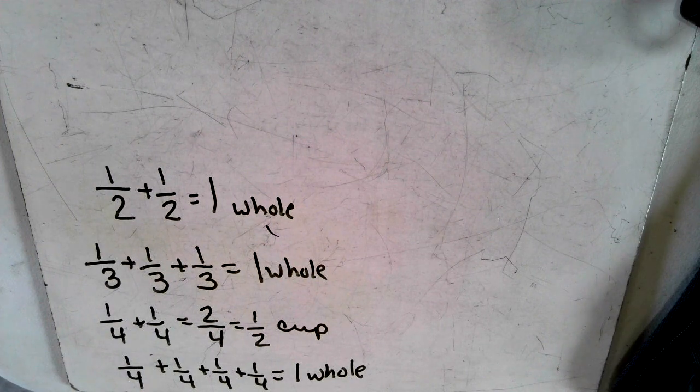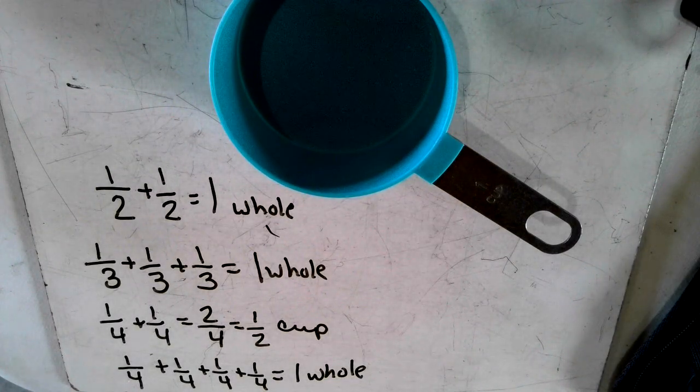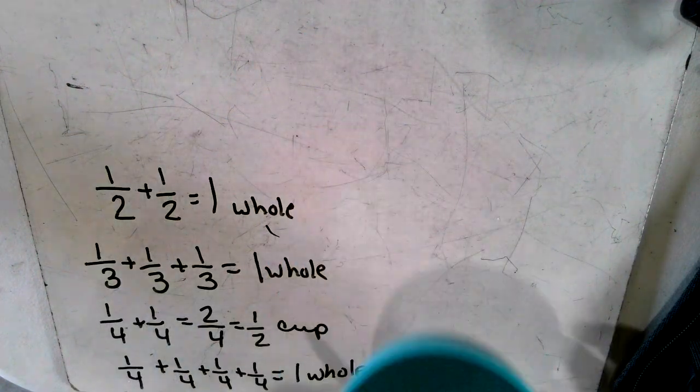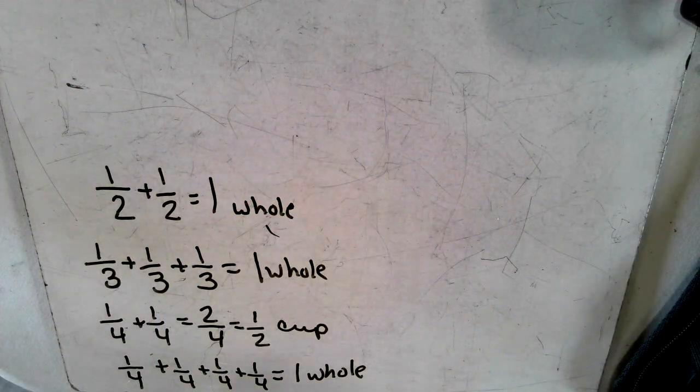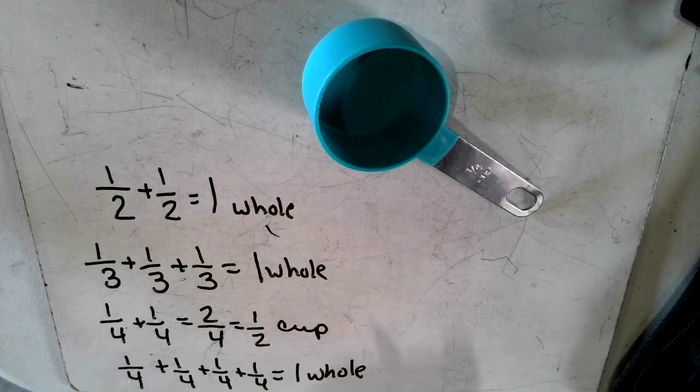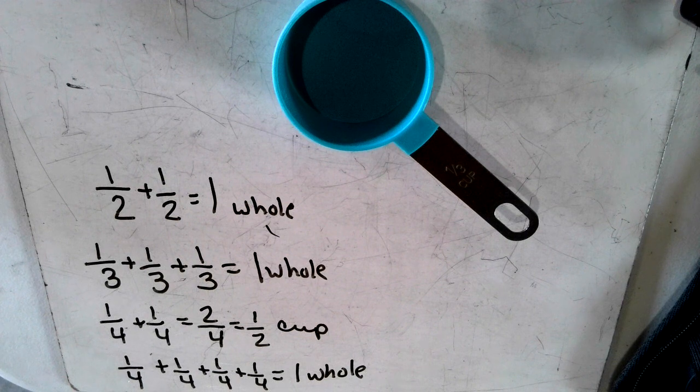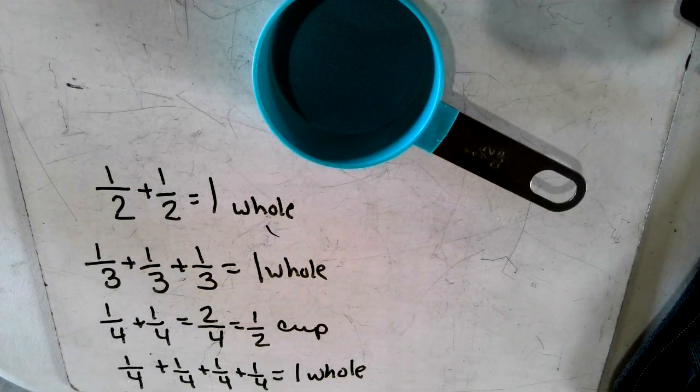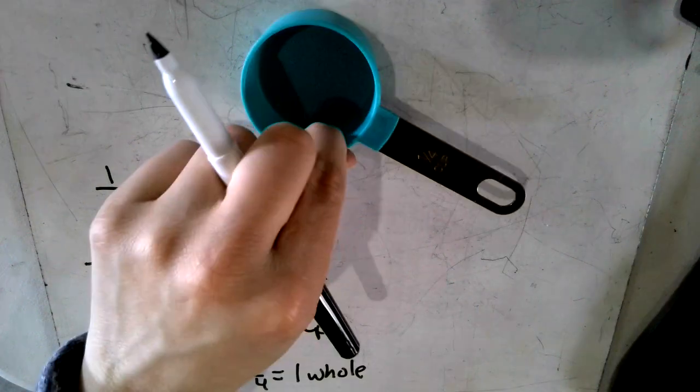You don't eyeball it and say, 'Oh, it's roughly up to here, so it's good enough.' No! If you need three fourths, use three of those. You need two thirds, use two of those. If you need a half, use a half. If you don't have the half because it's dirty, use two of the one fourths.